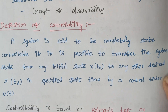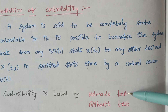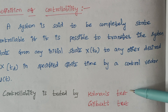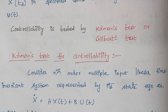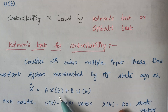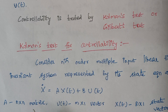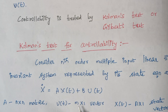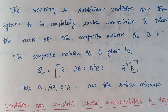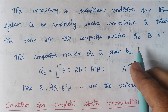Controllability is tested by doing two types of tests. One is known as Kalman's test and another one is known as Gilbert's test. With any one of these tests we can tell whether the system is controllable or not. First we are going to discuss Kalman's test for controllability. Here, x-dot is given by Ax(t) plus Bu(t), where A is an n×n matrix, u(t) is m×1, and x(t) is n×1.